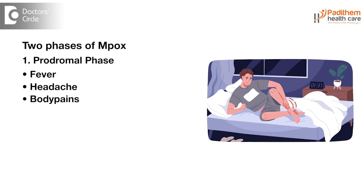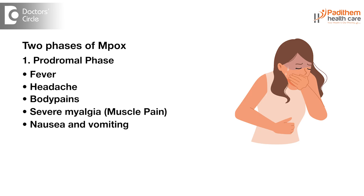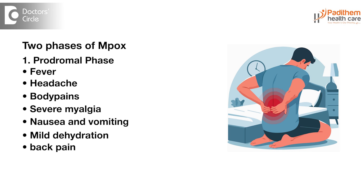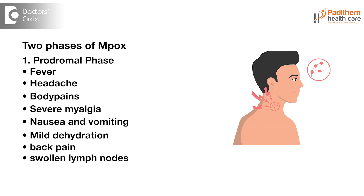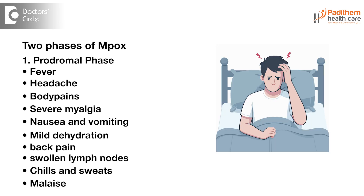Other prodromal symptoms include body pains, severe myalgia, nausea, mild vomiting, mild dehydration, and back pain. Swollen lymph nodes, also called lymphadenopathy, can also be present. Chills and sweats are also major symptoms, along with malaise — which is generalized weakness and tiredness where one cannot perform their daily activities. These are all the main symptoms in the prodromal phase.